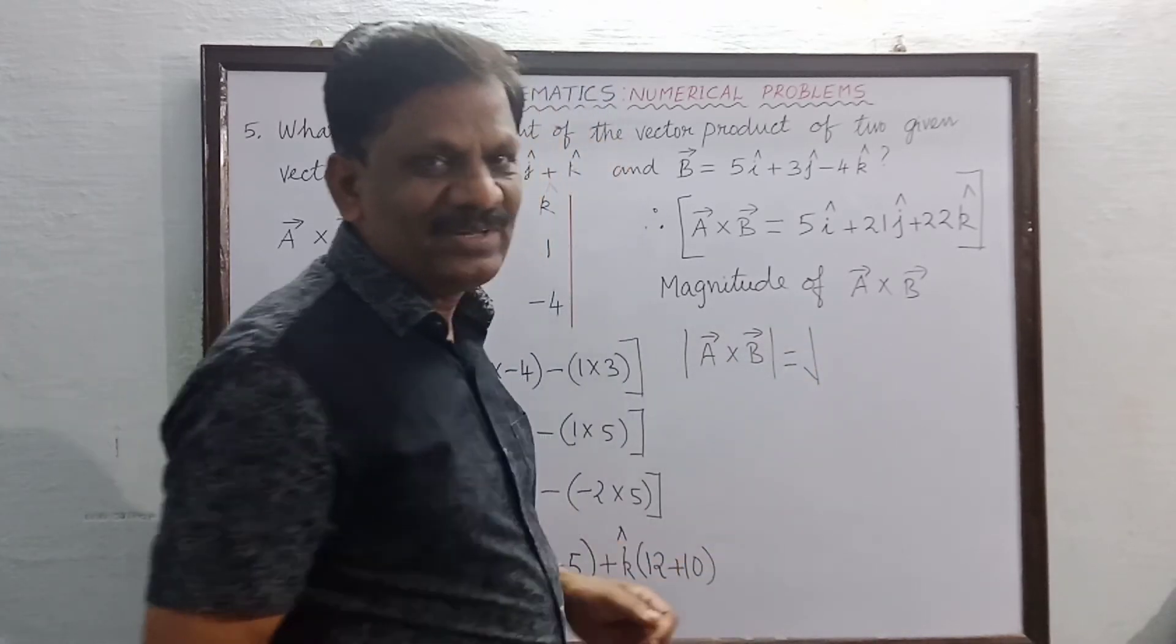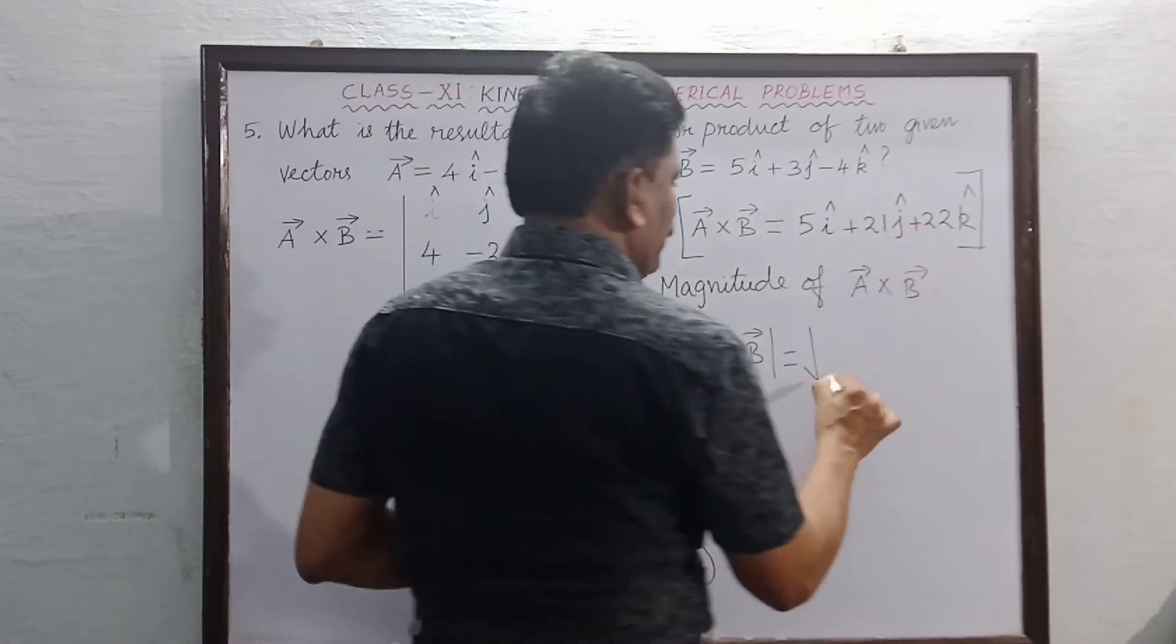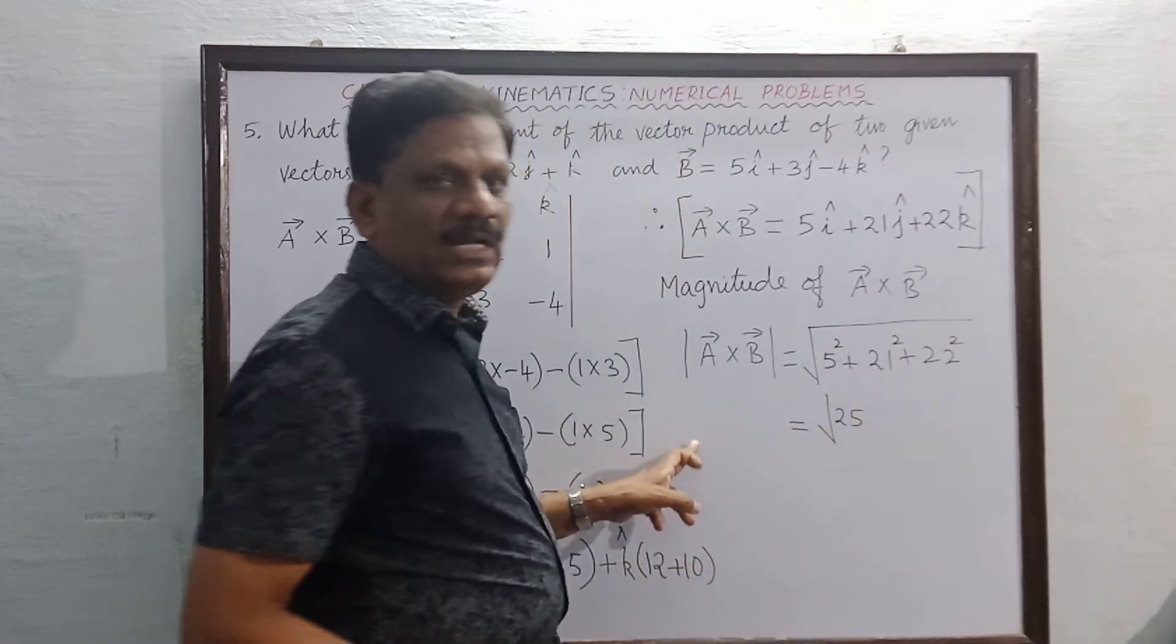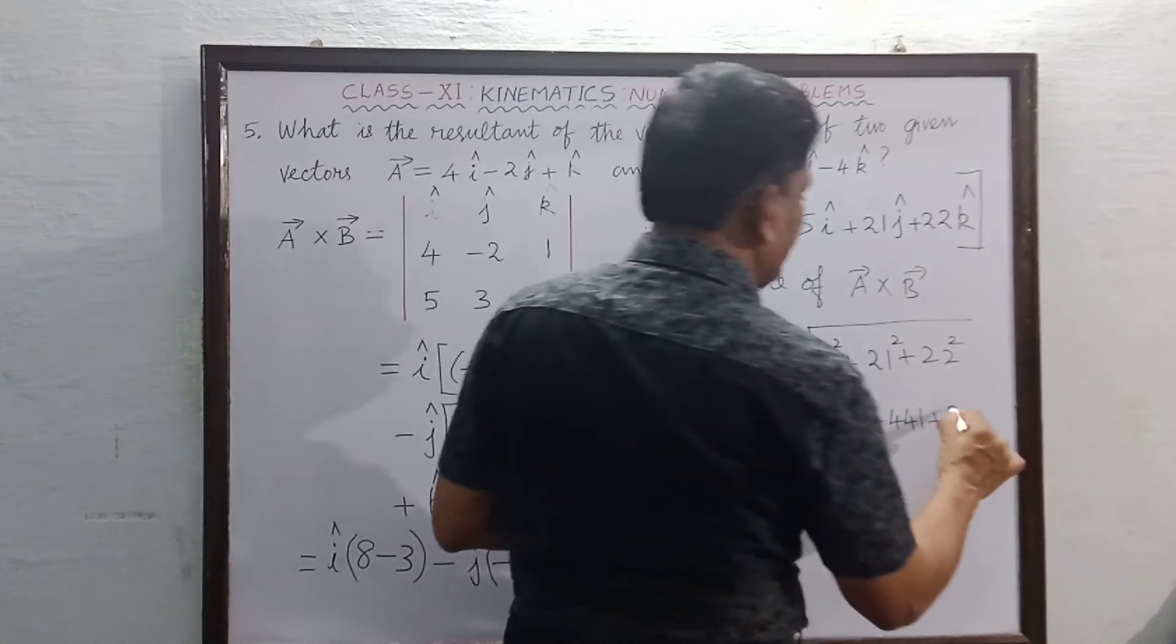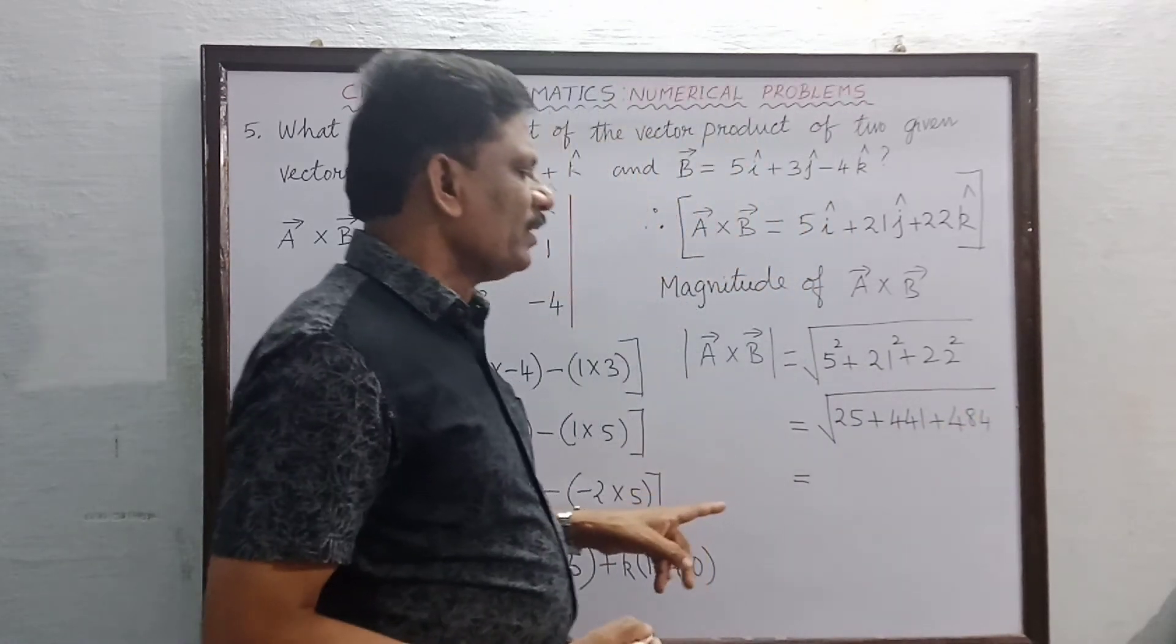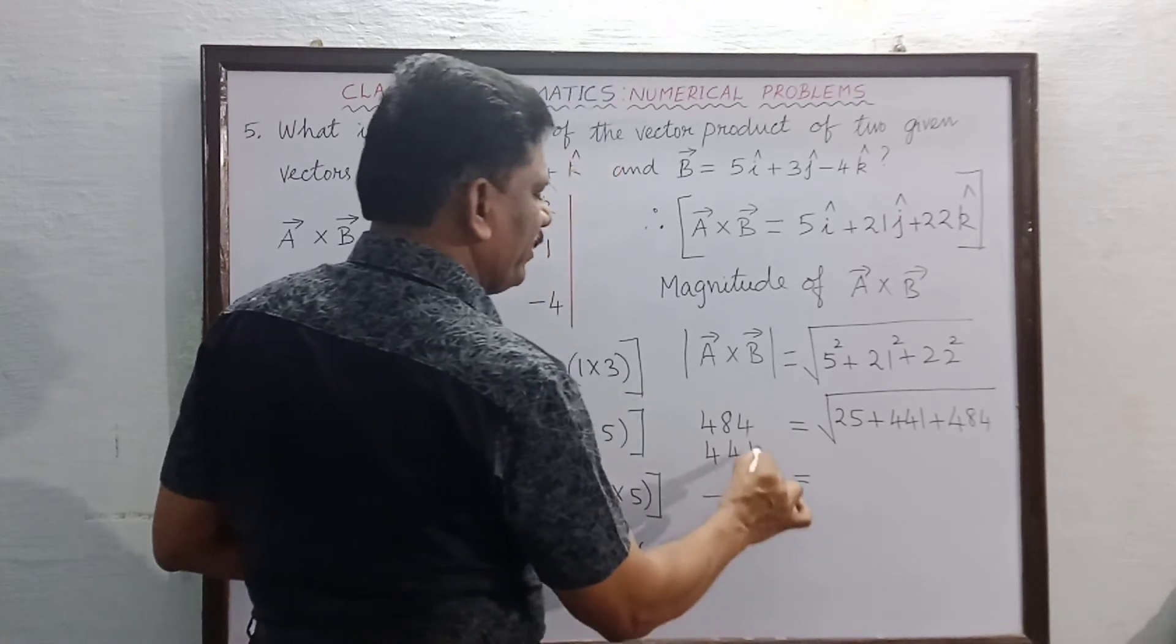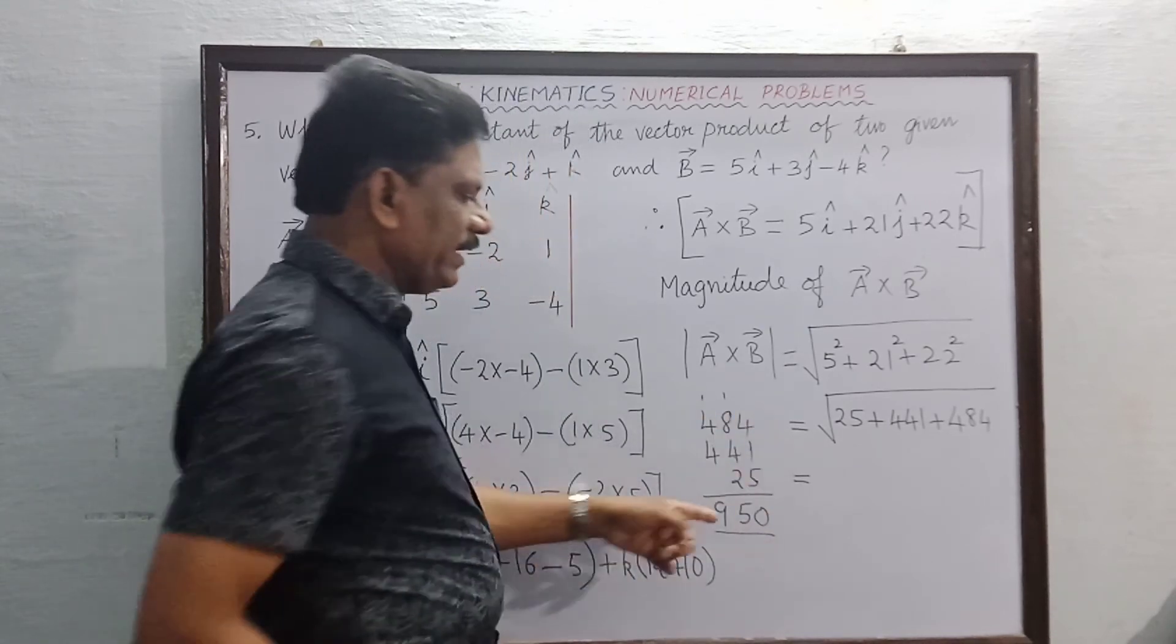The magnitude is square root of 5 square plus 21 square plus 22 square. This is equal to square root of 5 square is 25, 21 square is 441, plus 22 square is 484. If you add these three numbers, 25 plus 441 plus 484, the total is 950. So the magnitude is square root of 950.